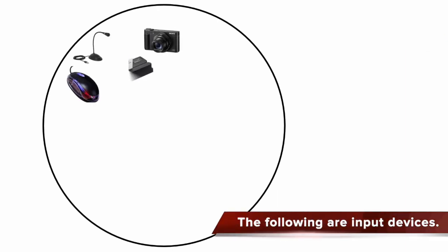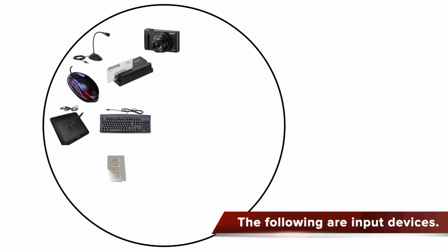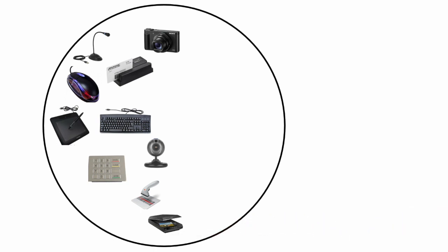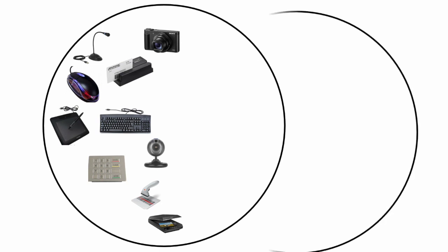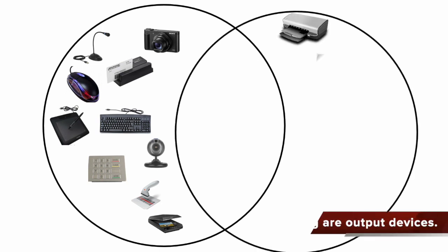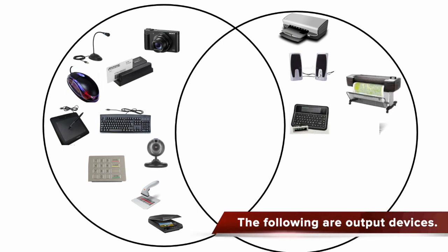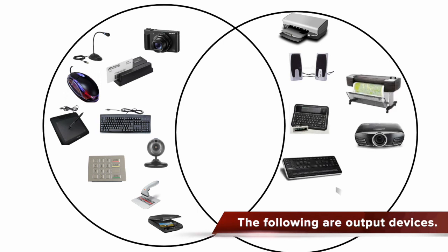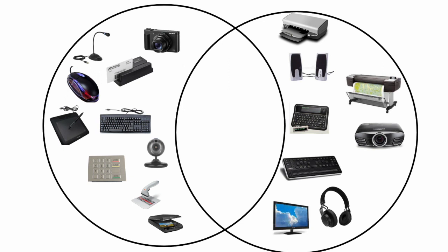The following are input devices. The following are output devices. Let us now identify the input devices: a digital camera, a microphone, a check scanner, a mouse, a keyboard.